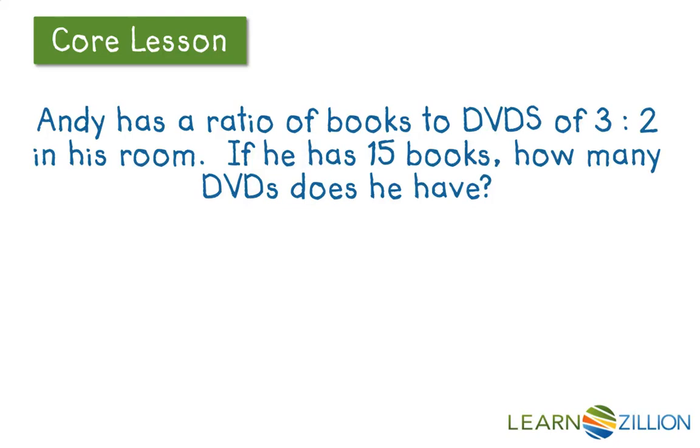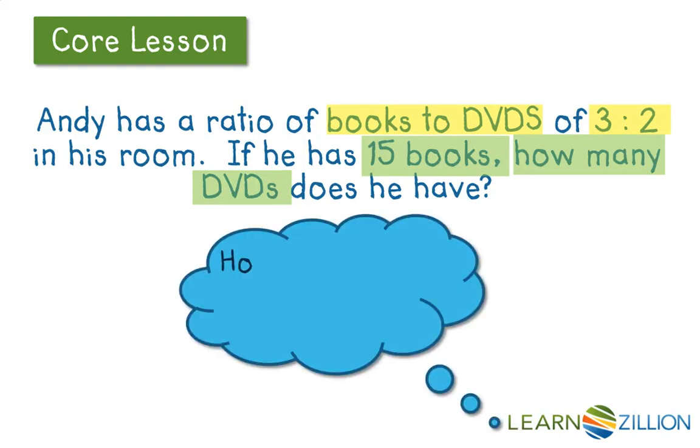The first step in avoiding a common mistake is to take the time to go through and annotate. I see that my ratio is books to DVDs, it's 3 to 2, and Andy has 15 books. I want to know how many DVDs does he have. Now that I have all this information, I want to know how can I use the ratio to help set up and solve this particular problem.